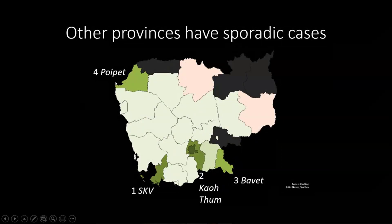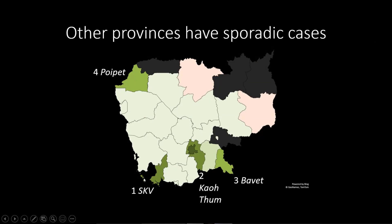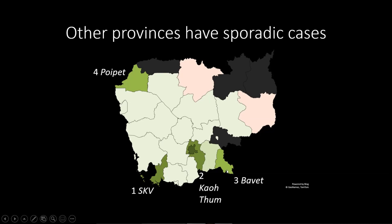Where are the outbreaks happening? Phnom Penh has the most, then Sihanoukville, Bavet, and Poipet. Interestingly, these are all casino towns, because casinos and large apartment buildings and hotels are environments where the virus spreads more easily. What is really promising is that we just haven't seen the same outbreaks happen in any other place. The rest of the country is seeing very sporadic cases — every three or four days maybe two or three cases, but it's not exploding.